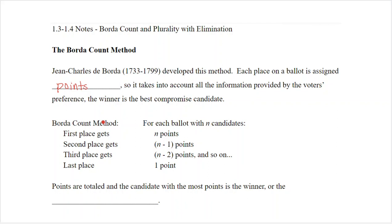The goal is that the person who gets the most points will be generally acceptable to most of the voters. Here's how you set up the Borda Count: if you have n candidates, then a first place vote earns n points, a second place vote earns n minus one points, and so on, with a last place vote earning one point. You total up the points for each candidate and the candidate with the most points is the winner, or the Borda candidate.